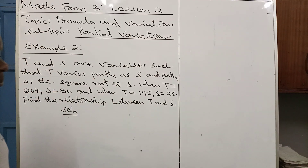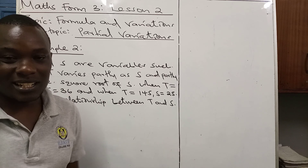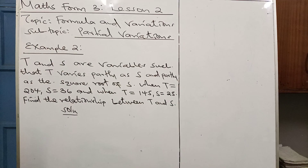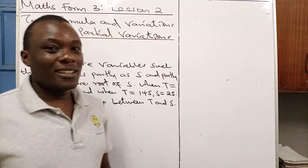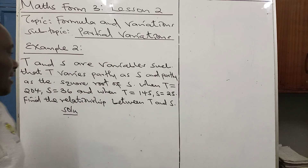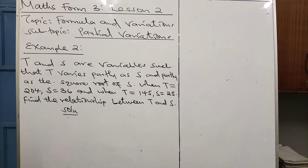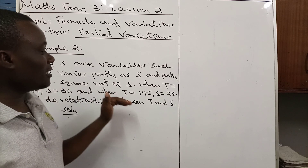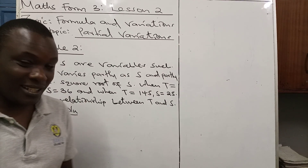In our first example I showed you how to handle the statement saying Partly Constant and Partly Varies as S. Remember we said that when you get that kind of statement you obtain an equation in the form Y equals Mx plus C. Today we have an example saying T and S are variables such that T varies partly as S and partly as the square root of S. When T equals 204, S is 36, and when T equals 145, S equals 25. Find the relationship between T and S.